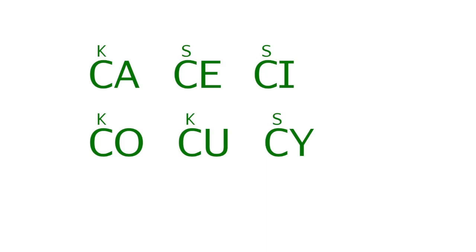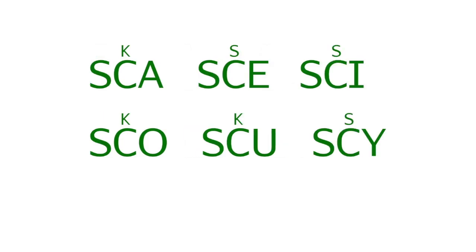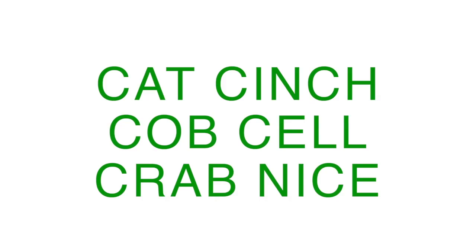C sounds like S before E, I, and Y. Before all other letters — basically A, O, U, L, and R — it sounds like K. Now a few words: cat, cinch, cob, sell, crab, nice.